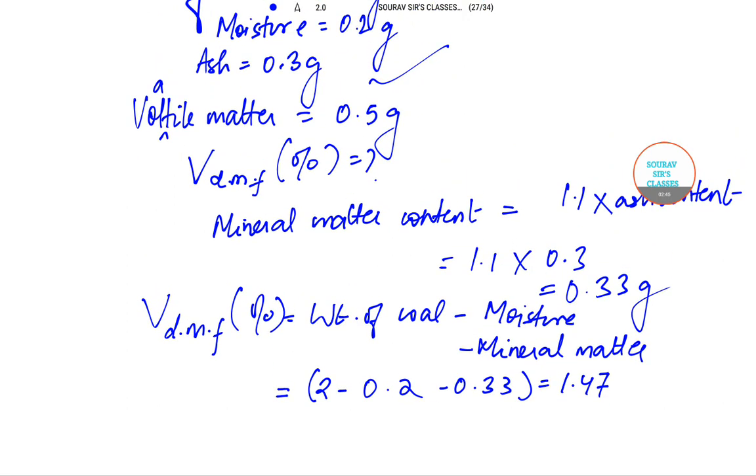We have to calculate in percentage, so V is equal to 0.5 by 1.47 into 100. This becomes 34.01 percent, which is the answer.